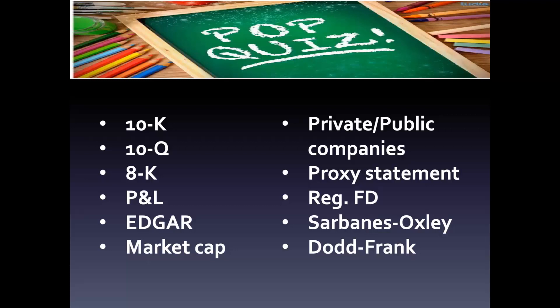Companies are divided into private and public companies. A public company is one where shares are available to the public — anybody can buy them. Because they are public, they have to meet disclosure requirements. Many of the disclosure requirements we discussed do not apply to private companies — they apply only to public companies. Private companies may have shareholders but shares are not available to the public; they may also be single-owner companies or take other legal forms. As a result, many private companies do not have investor relations officers.